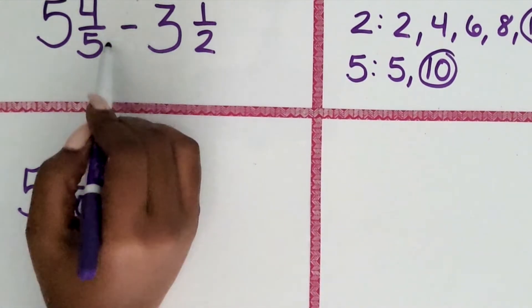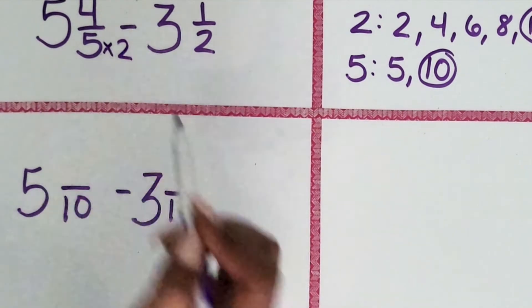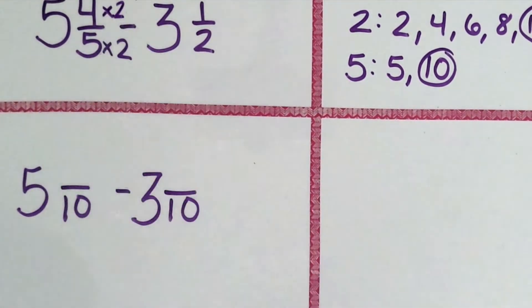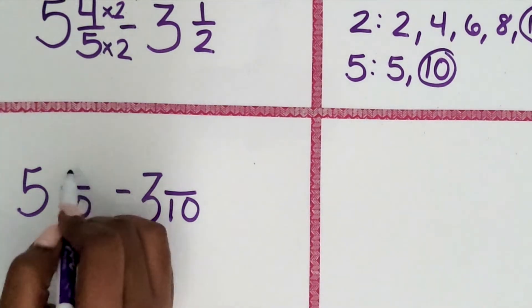How do we go from 5 to 10? Well, 5 times 2 is 10. So 4 times 2 is 8.